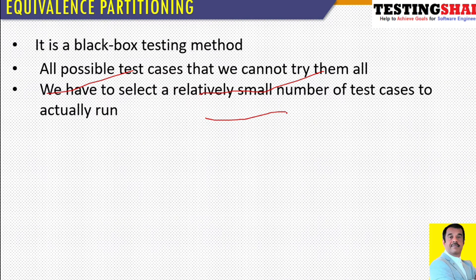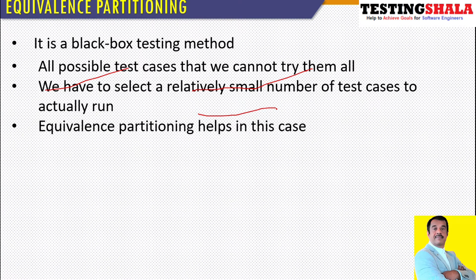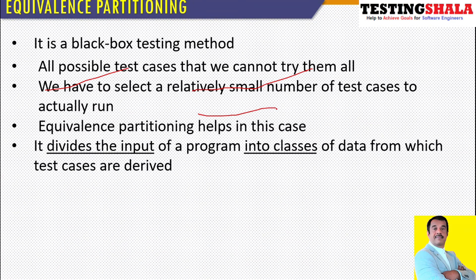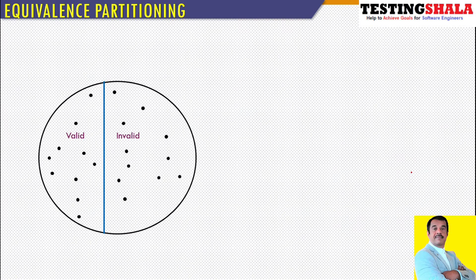We have to split the test data into multiple equivalence classes and pick one item from each class. That way our job becomes much easier; otherwise it becomes very challenging to execute each and every case. An equivalence class represents a set of valid or invalid states for an input condition.